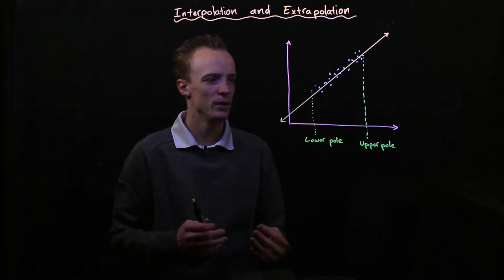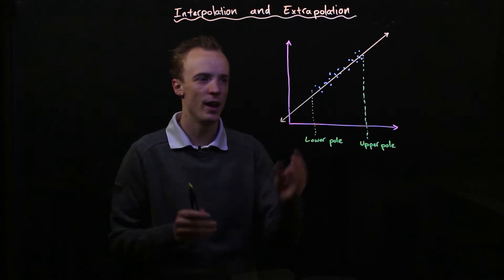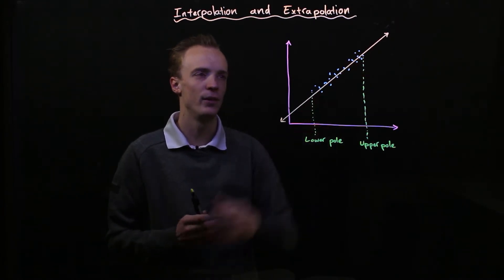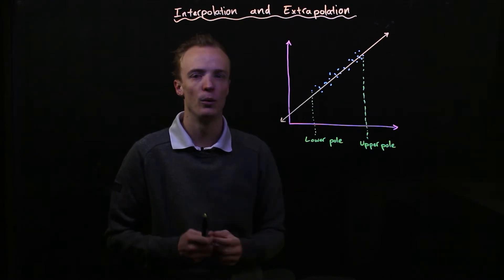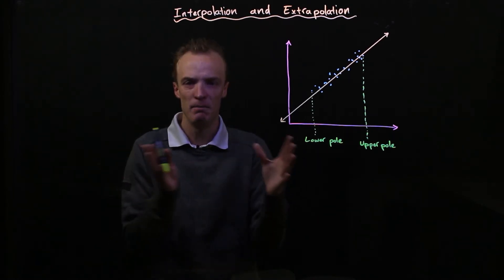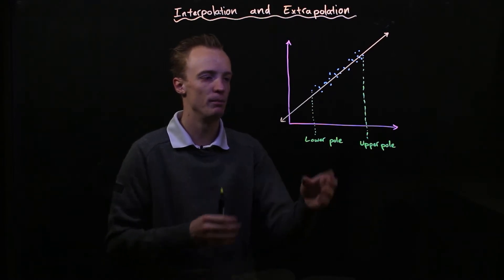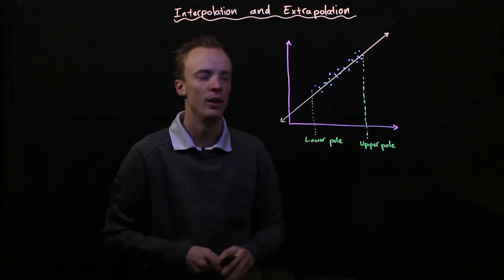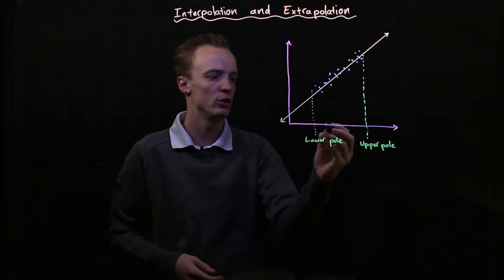Now if we were to make predictions of our graph using our line of best fit between the two poles we call this interpolation. Inter meaning in between and the polation in between the two poles. So we're making predictions between the two poles here.